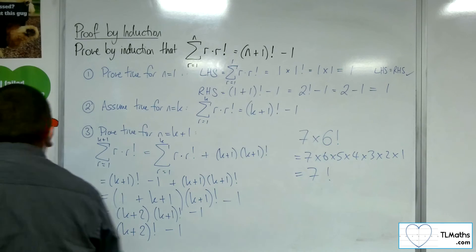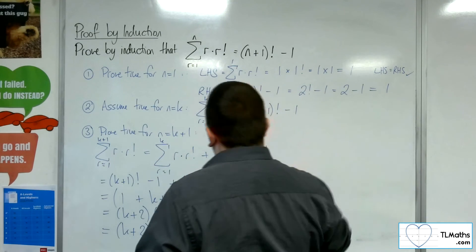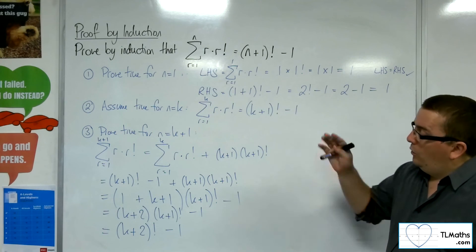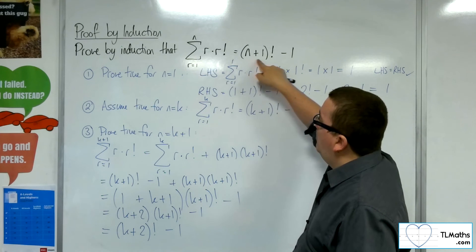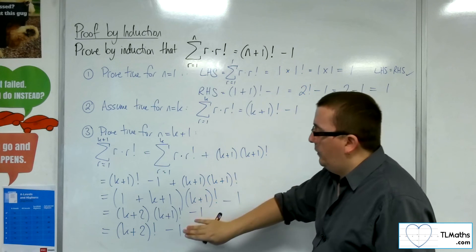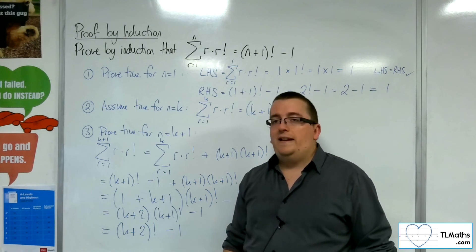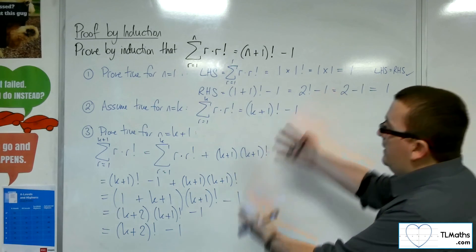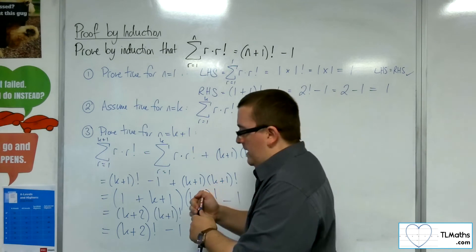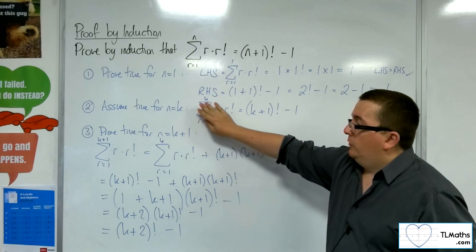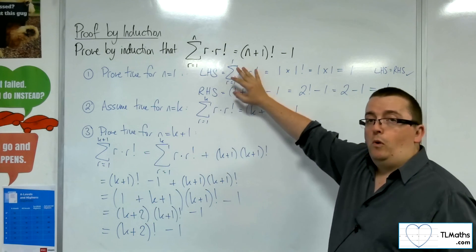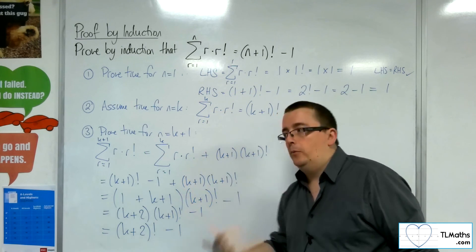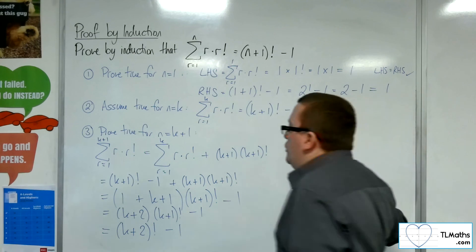So there's a manipulation of factorials there that's maybe not so obvious. What we've arrived at is precisely K plus 2 factorial take away 1, which is K plus 1 plus 1 factorial take away 1 — exactly what we wanted. This has been proved true for N equals K plus 1 if N equals K is true. If it's true for N equals K, it's true for N equals K plus 1; and since it's true for N equals 1, that means N equals 2 is true, which means N equals 3 is true, and so on.